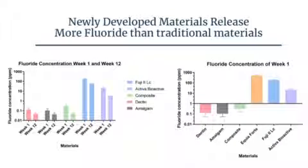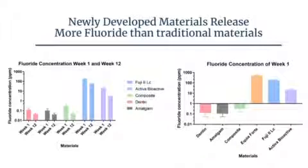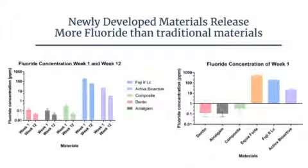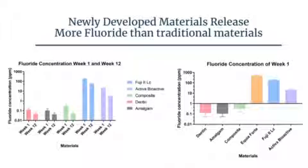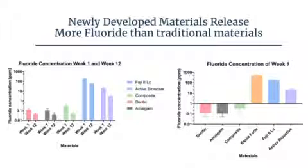Just to compare the ion release between week one and week 12, to see if that ion release is a long-course phenomenon — Fuji 2LC is really not changing that much. Even at the end of the 12th week, it's still releasing a pretty significant amount of fluoride. Activa Bioactive is still releasing some level of fluoride at the end. However, the drop is more drastic.